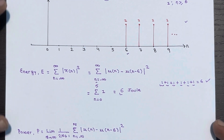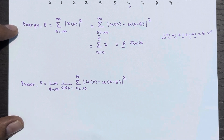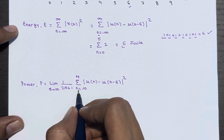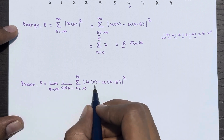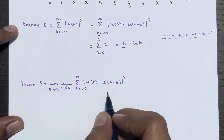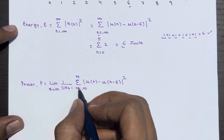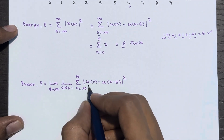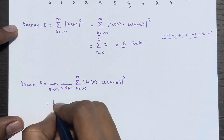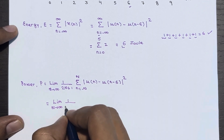Now let's calculate the power. The formula for power is: limit as N tends to infinity of 1 divided by 2N plus 1, times the summation from n equal to minus N to plus N of the absolute square of x of n. We replace x of n with u of n minus u of n minus 6. Since this expression only gives a non-zero value for n equal to 0 to 5, we can restrict the summation to that range.